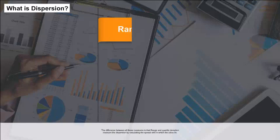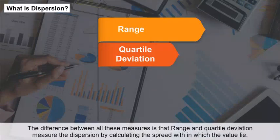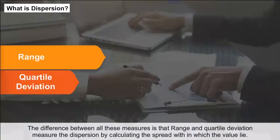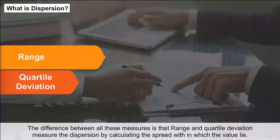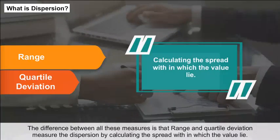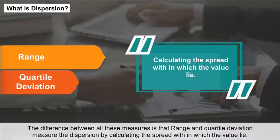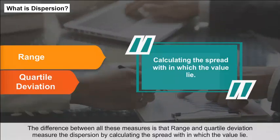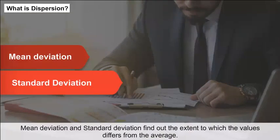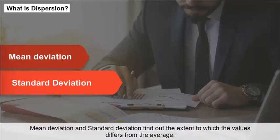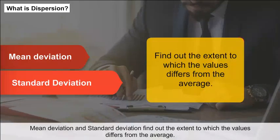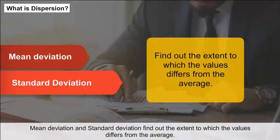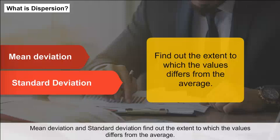The difference between all these measures is that range and quartile deviation measure the dispersion by calculating the spread within which the values lie, while mean deviation and standard deviation find out the extent to which the values differ from the average.